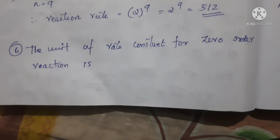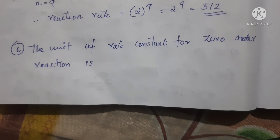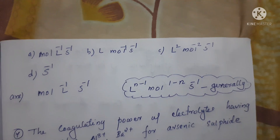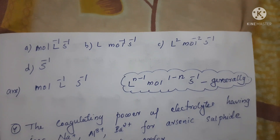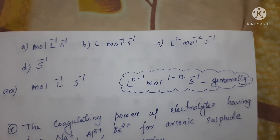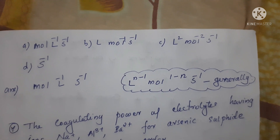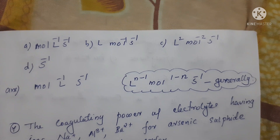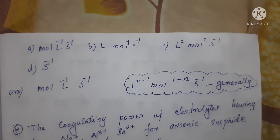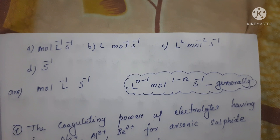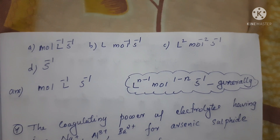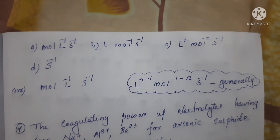Next question: The unit of rate constant for a zero order reaction is Option A mol·L⁻¹·s⁻¹, Option B L·mol⁻¹·s⁻¹, Option C L²·mol⁻²·s⁻¹, Option D s⁻¹. Correct answer is Option A, mol·L⁻¹·s⁻¹ for a zero order reaction.